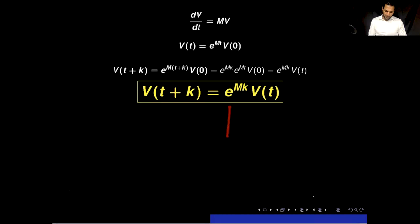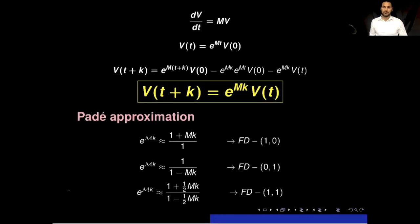There is one issue: how to approximate e^(Mk). One approach is Taylor series approximation, but this did not produce very promising results. We found another approach — Padé approximation, which approximates the exponential function by a rational function. Each different Padé approximation gives a different numerical scheme, so this approach provides an entire class of numerical schemes.